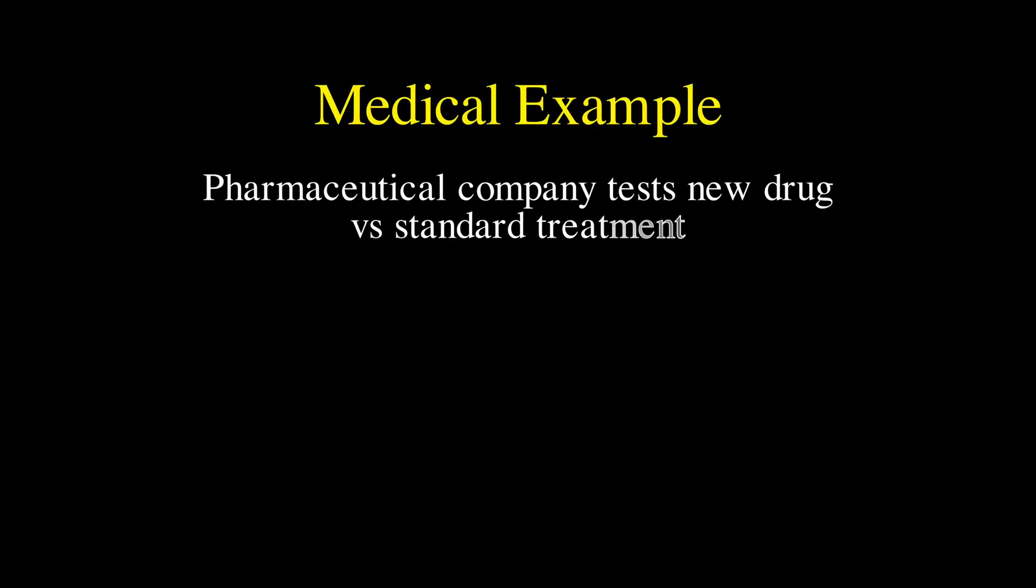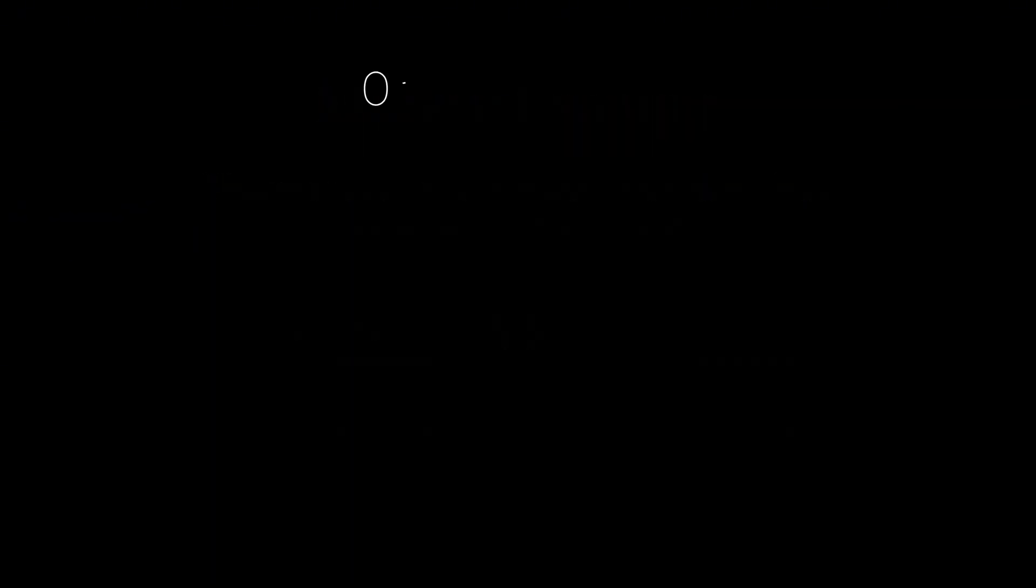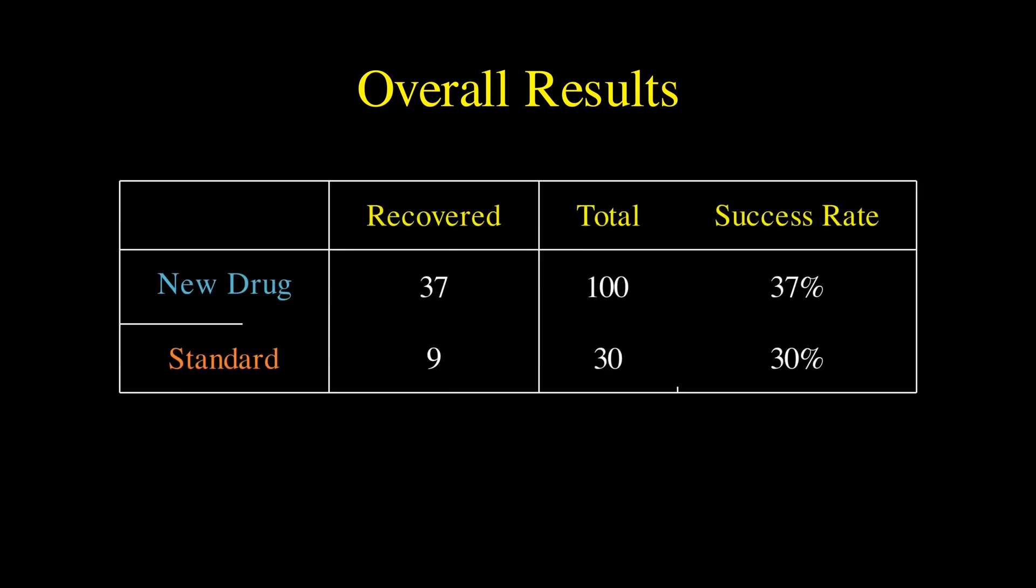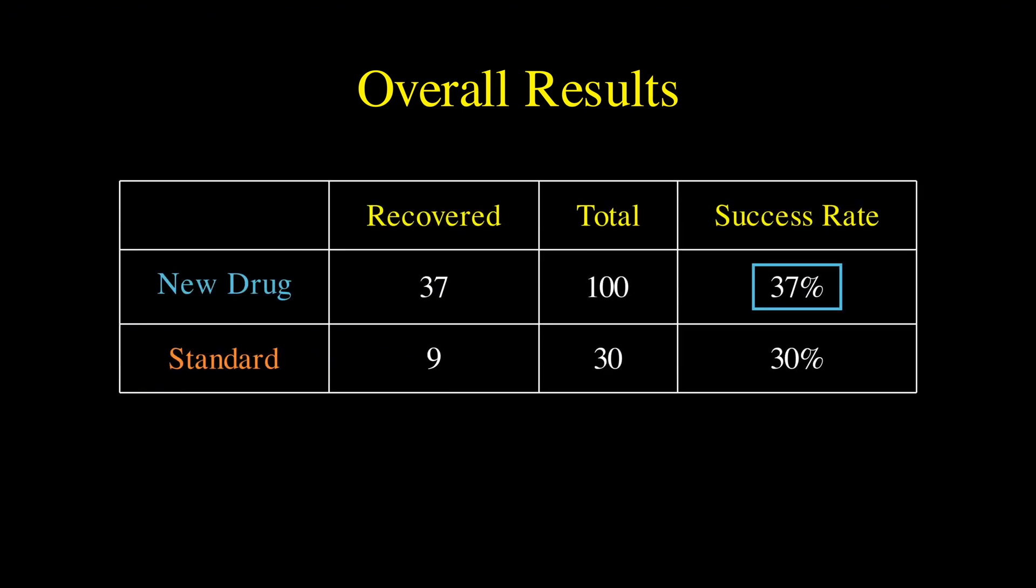A pharmaceutical company tests a new drug against the standard treatment, and when they examine the overall results, they find some surprising numbers. 37 out of 100 patients recovered with the new drug, giving a 37% success rate, while 9 out of 30 patients recovered with the standard treatment, giving a 30% success rate.